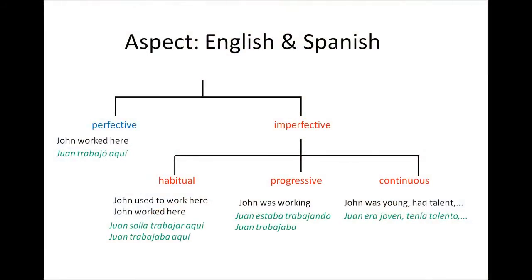By looking at this slide you will see how this maps out. Look at the imperfective and see how it divides itself into three categories. From left to right: habitual, progressive, and continuous. The first two — habitual and progressive — correspond very closely to English and there's no problem here at all.